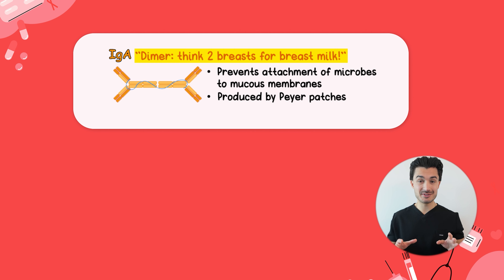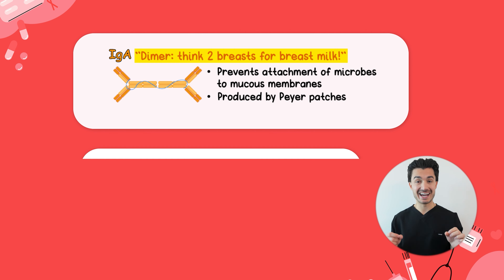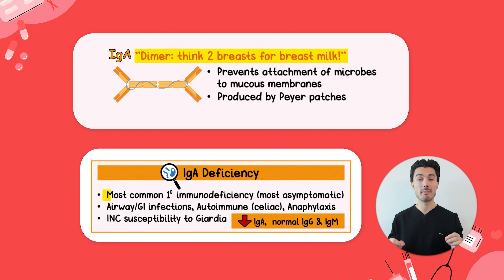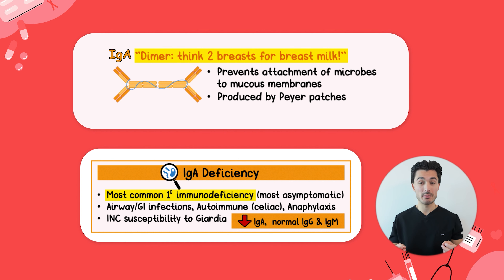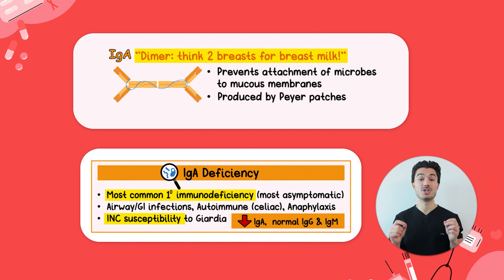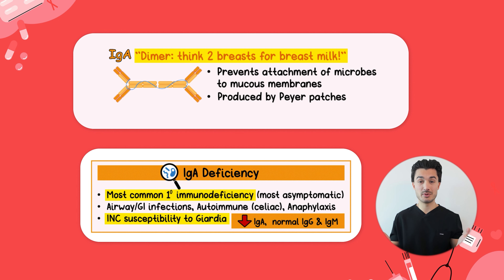Really high yield: IgA deficiency is the most common hereditary immunodeficiency. Since IgA is a key player in mucosal protection, patients who are deficient have increased risk of sinopulmonary infections, atopy, and — a very high-yield USMLE fact — increased risk of Giardia infections. Whenever you see deficiency of humoral or mucosal immunoglobulins in a vignette, think IgA.